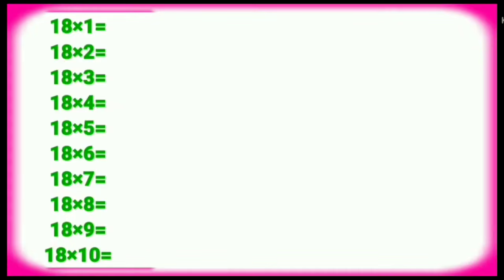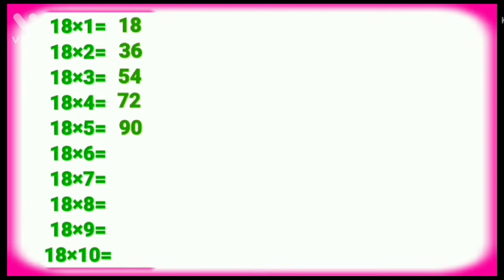Table of Eighteen. Eighteen ones are eighteen. Eighteen twos are thirty-six. Eighteen threes are fifty-four. Eighteen fours are seventy-two. Eighteen fives are ninety. Eighteen sixes are one hundred eight. Eighteen sevens are one twenty-six.